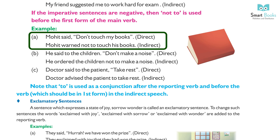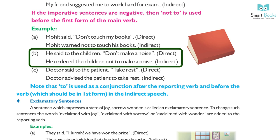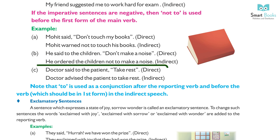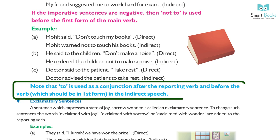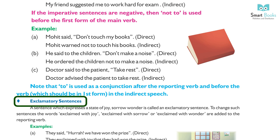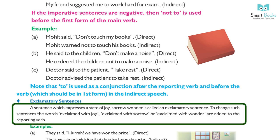Negative imperative examples: (a) Mohit said, 'Don't touch my books.' (Direct) → Mohit warned not to touch his books. (Indirect) (b) He said to the children, 'Don't make a noise.' (Direct) → He ordered the children not to make a noise. (Indirect) (c) Doctor said to the patient, 'Take rest.' (Direct) → Doctor advised the patient to take rest. (Indirect) Note: 'to' is used as a conjunction after the reporting verb, and the verb should be in its first form.